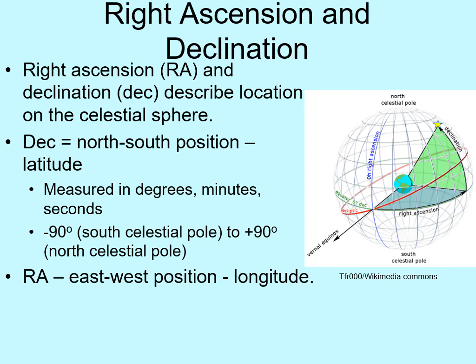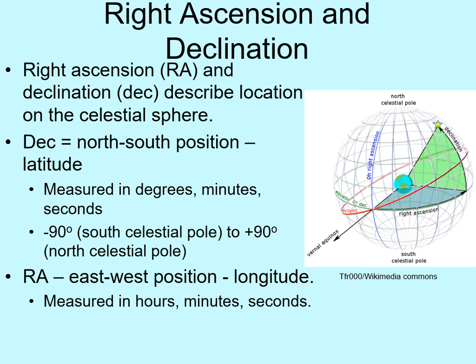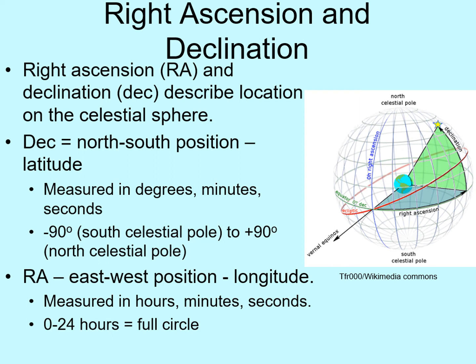Right ascension is more like longitude on the Earth. It measures how far east or west an object is on the celestial sphere. However, unlike longitude, right ascension is not usually measured in degrees. Instead, it's listed in hours, minutes, and seconds. So right ascensions are given from zero to 24 hours. This reflects the fact that in 24 hours, the Earth makes a complete rotation, so the view over our heads runs through all 24 hours of right ascension in that time.